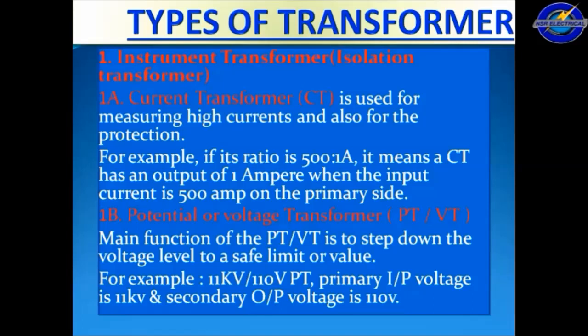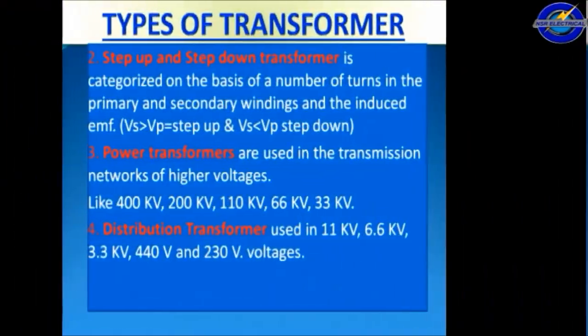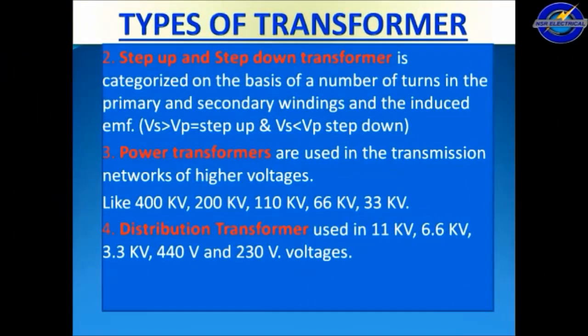Potential transformer (PT) or voltage transformer (VT): the main function of a PT is to step down the voltage level to a safe limit or value. For example, if we have to measure 11 kV, it is critical to measure directly, so the PT steps down 11 kV to 110 volts. The primary of the PT is 11 kV and the secondary output voltage is 110 volts.